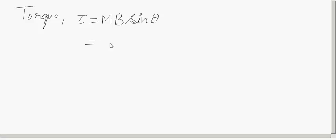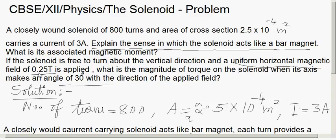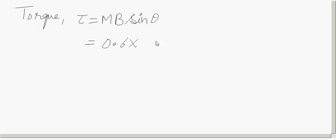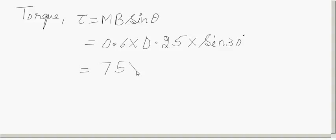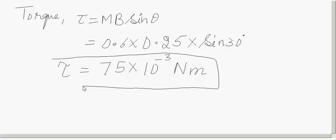Now m is 0.6, which we just calculated, and B is given as 0.25 tesla, and the angle is 30 degrees. So the torque equals 0.6 multiplied by 0.25 multiplied by sin 30 degrees, giving 75 multiplied by 10 to the power minus 3 newton meter. The torque is 75 into 10 to the power minus 3 newton meter.